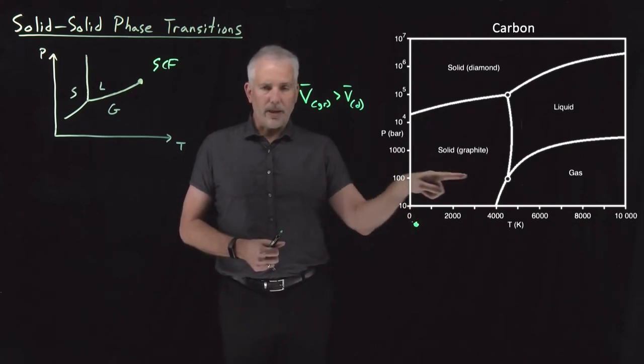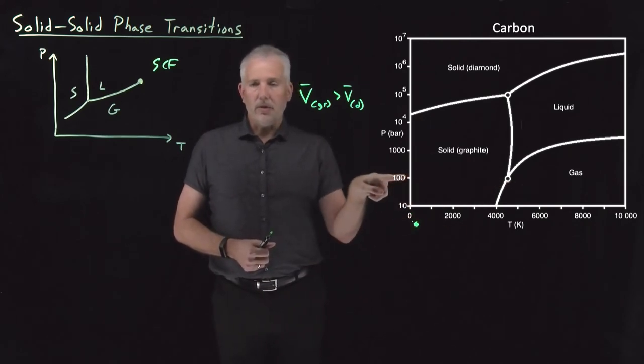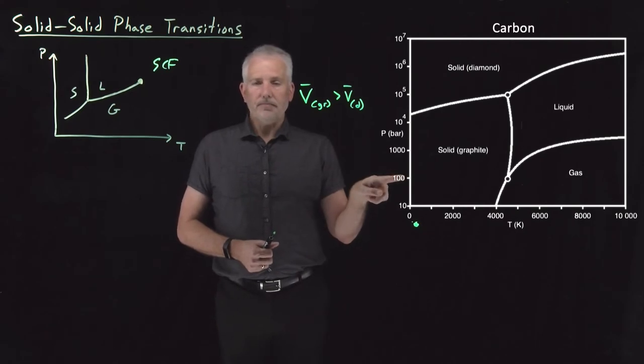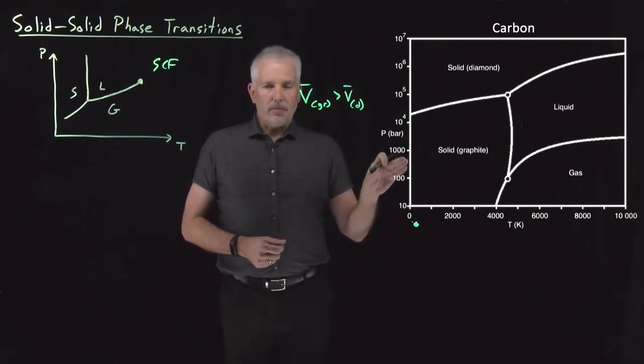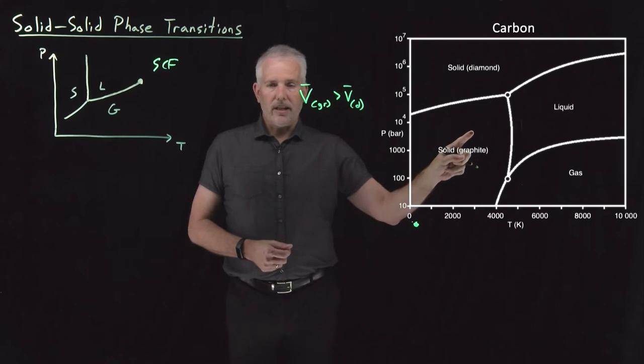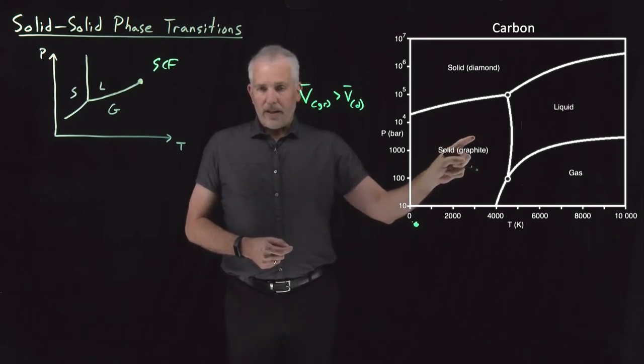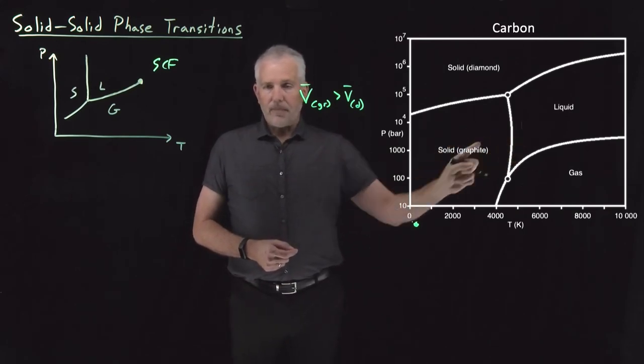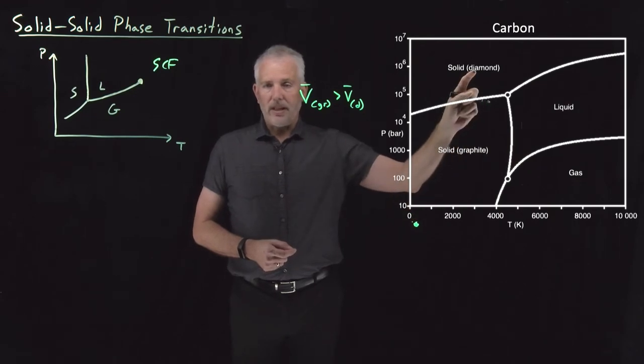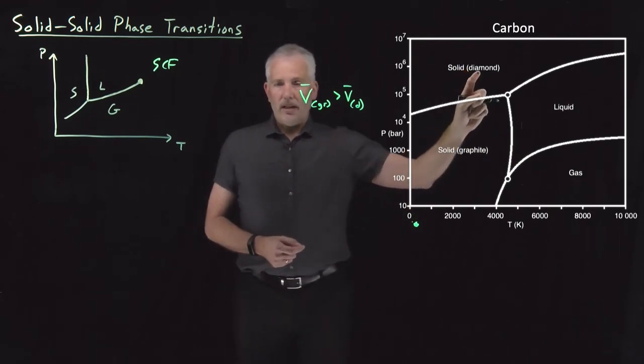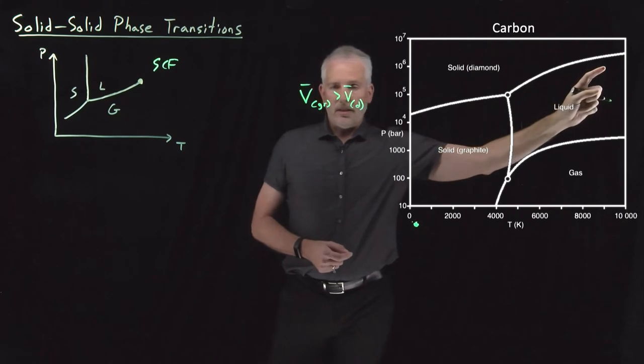If we want to make liquid carbon, we've got to get up to pressures of at least 100 atmospheres or so. However, if we're at pressures above 100 atmospheres, we could take graphite under compression and melt it. If we're even higher pressures, we could take diamond under high pressures and melt it as well.